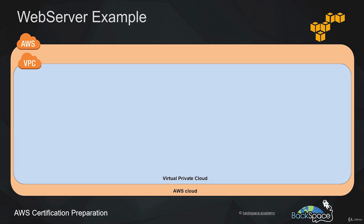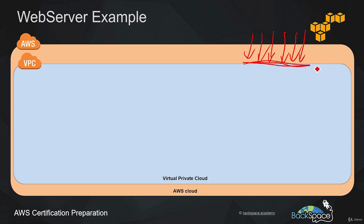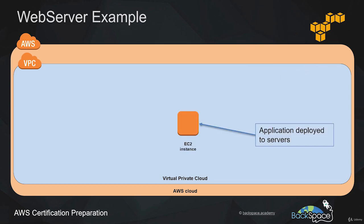Amazon LightSail is the easiest way to launch virtual servers running applications in the AWS cloud — AWS provisions everything including DNS management and storage to get you up and running quickly. Amazon Elastic Container Service, or ECS, is a highly scalable, high-performance container management service for Docker containers, running on a managed cluster of EC2 instances. AWS Lambda is a serverless service that lets you run code in the AWS cloud without provisioning or managing servers — you just upload your code and AWS takes care of everything.